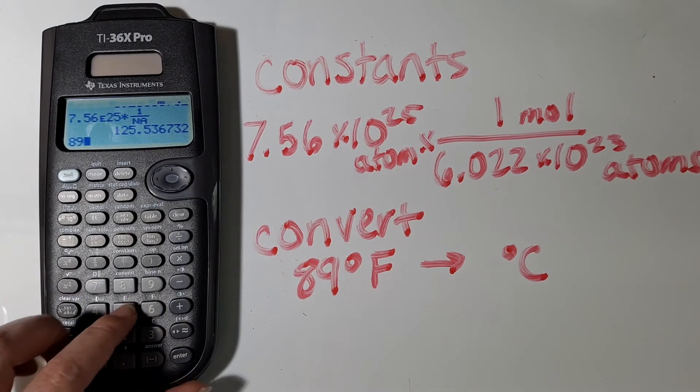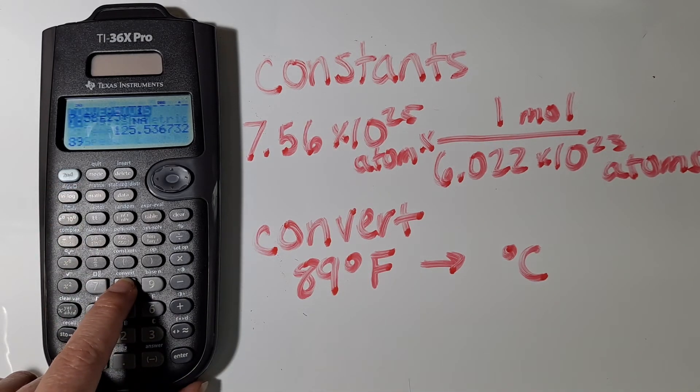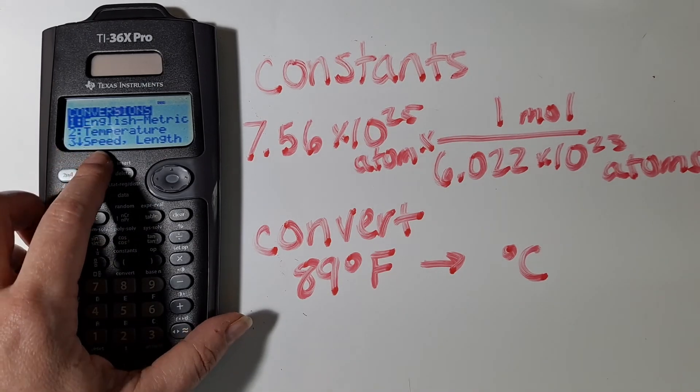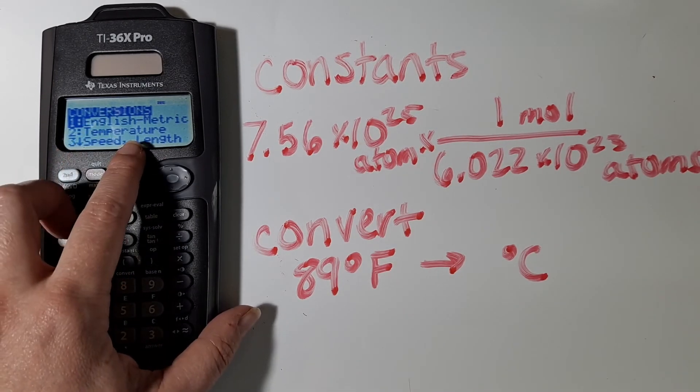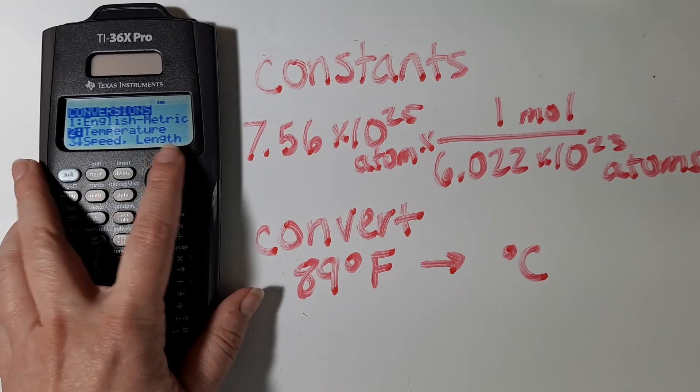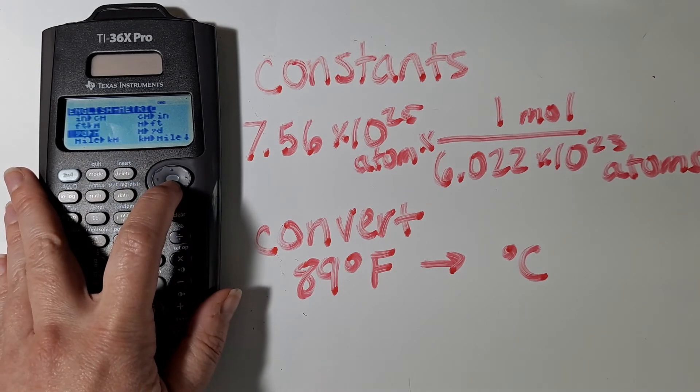we're going to type in 89, and then I'm going to go to 2nd, and then Convert. And then I have various different conversions. This is a temperature one, and so I'm going to scroll down to where it says Temperature. The English metric one is mostly about going from feet to meters, gallons to liters,